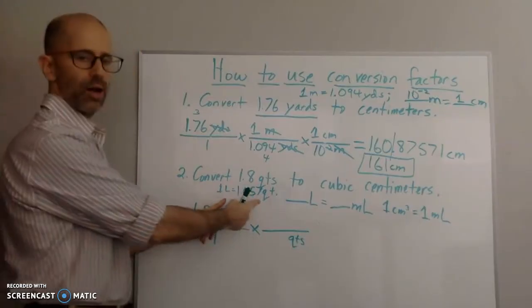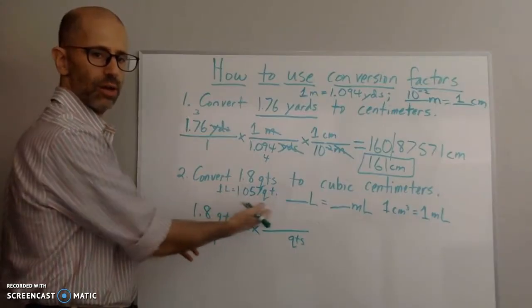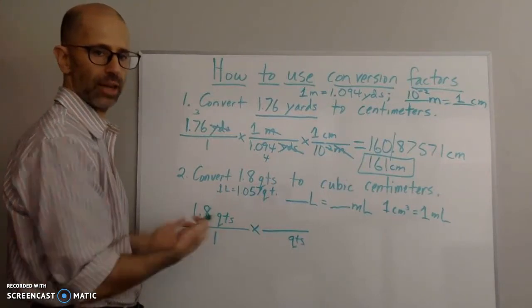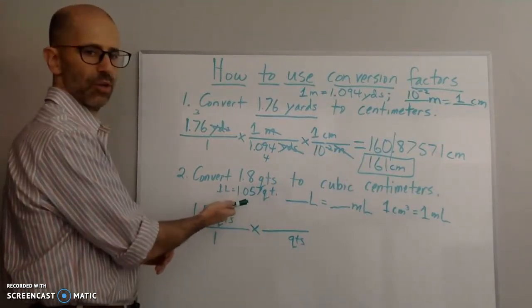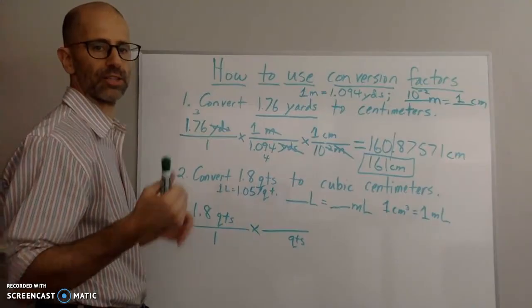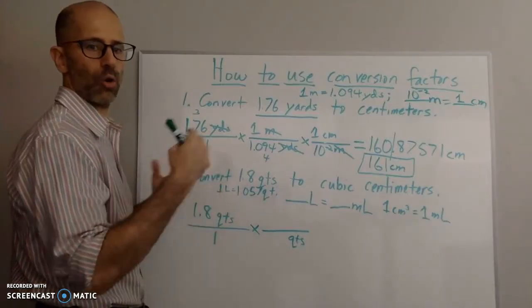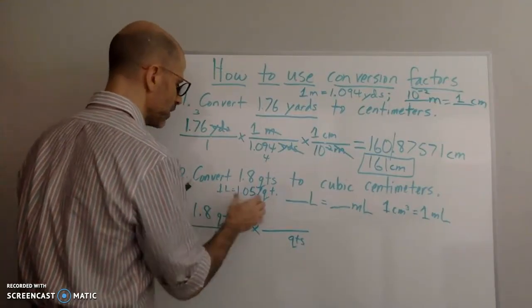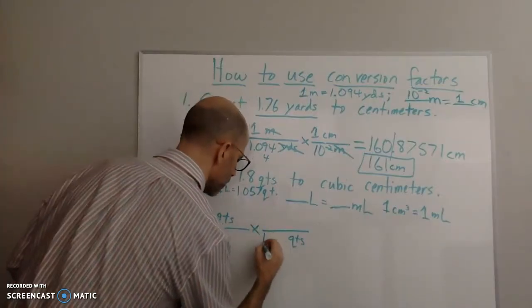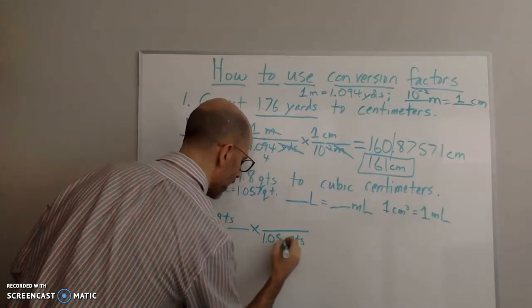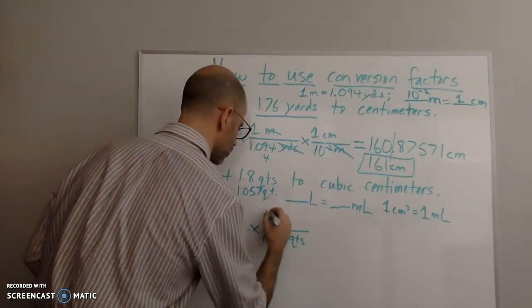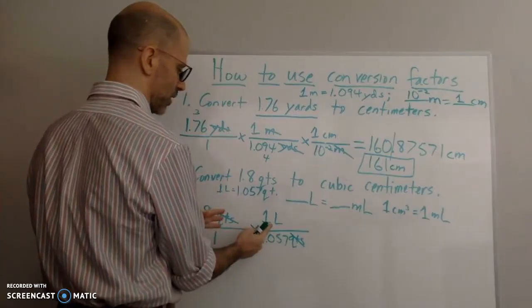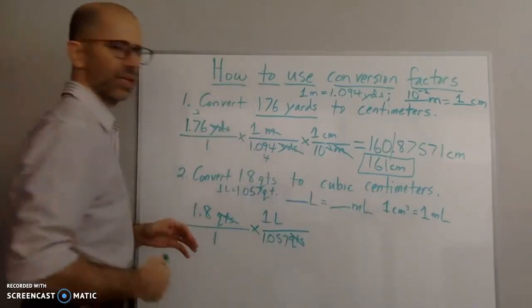These equalities are probably going to be given to you by your teacher, or you'll look them up in the back of the book or online. You are probably expected to know your prefix multipliers for metric-to-metric equalities. Using the equality provided, I put 1.057 quarts on the bottom and 1 liter on top. Quarts cancel out and now I have liters on top, but I need cubic centimeters, so I'm not done.